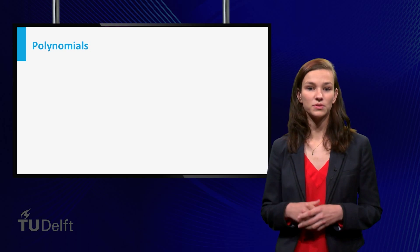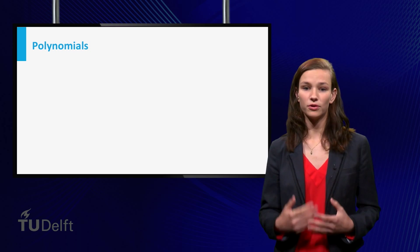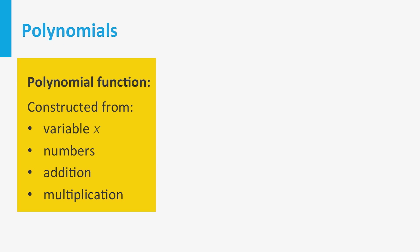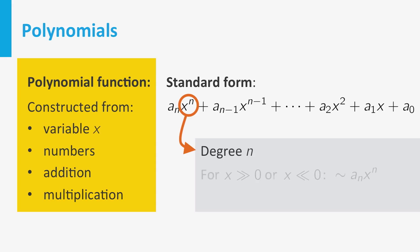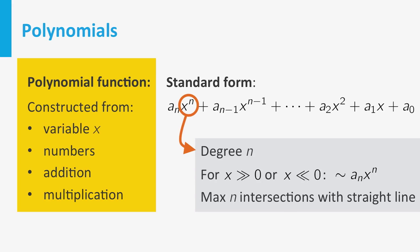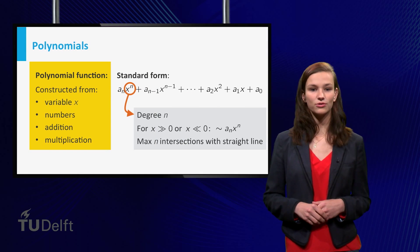We then considered specific types of functions, starting with polynomial functions. Polynomial functions can be constructed from a variable and a set of numbers, using only addition and multiplication. Any polynomial can be put into its standard form, in which no brackets occur anymore, every power of x occurs once, and the terms are ordered from high power to low. The highest occurring power in standard form is called the degree. The degree determines the behavior of the polynomial function as x grows large. Also, the higher the degree, the more complicated the function and its graph may behave.